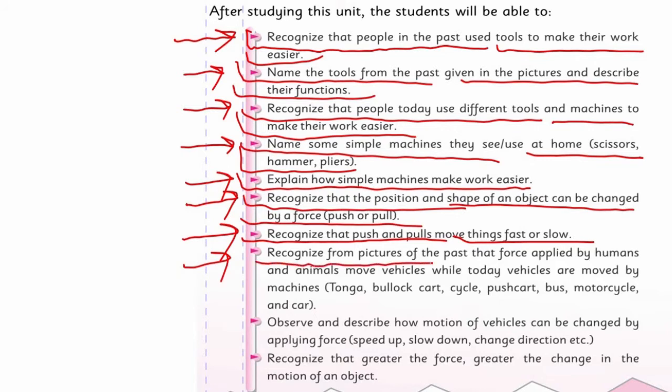SLO number 8: Recognize from pictures of the past that force applied by humans and animals move vehicles, while today vehicles are moved by machines. Tonga, bullock cart, cycle, push cart, bus. Now look at bus, motorcycle and car.